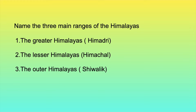Name the three main ranges of the Himalayas. The greater Himalayas is the Himadri, the lesser Himalayas is the Himachal, and the outer Himalayas is the Shivalik.